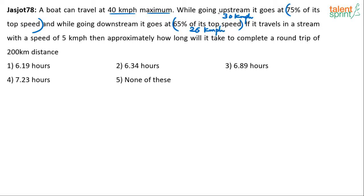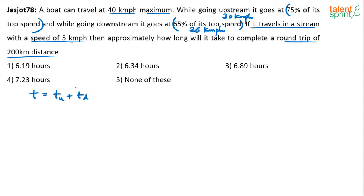Now the question boils down to simple. While going upstream, the boat travels at 30 km per hour. And while going downstream, it travels at 26 km per hour. The speed of the stream is 5 km per hour. The total time required will be equal to time taken to go upstream plus time taken to go downstream.